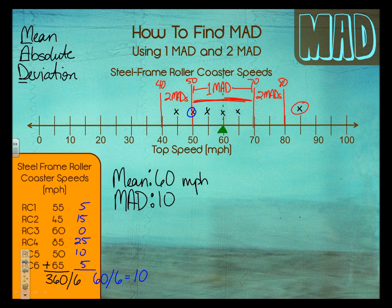That's another reason why you want to be pretty exact when you plot your dots on the dot plot and draw your MAD lines. Is it right on the line, or just a hair in front? Had that been 50.1, it would be considered within one MAD. But it's right on 50, right on that boundary. So that is how we use one MAD and two MADs and show that on a dot plot. Our MAD was 10, so 10 above and 10 below is one MAD; an additional 10 — so 20 above or 20 below — is within two MADs.